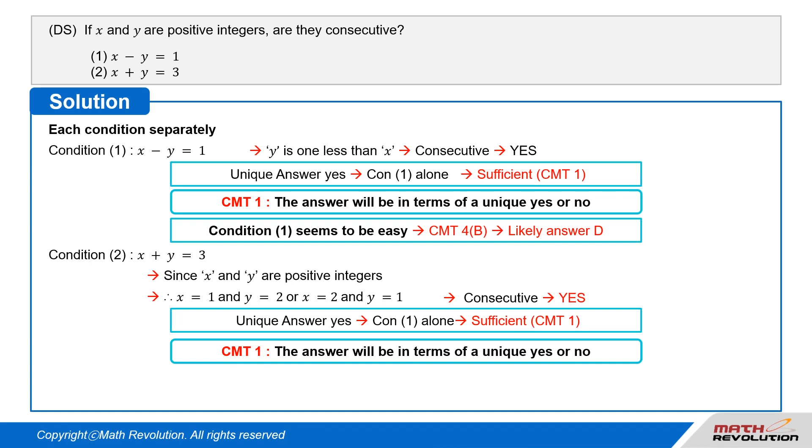This is a very difficult question. It makes you think that the condition is not sufficient because there are several answers in condition 2. But there is actually only one answer, which makes it sufficient. That's why CMT4B is important.